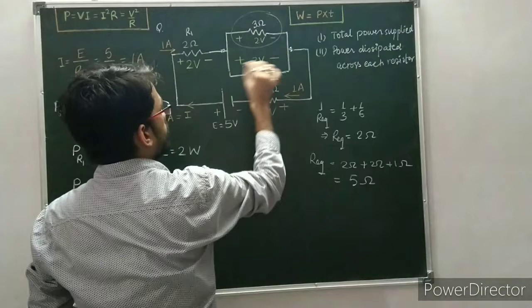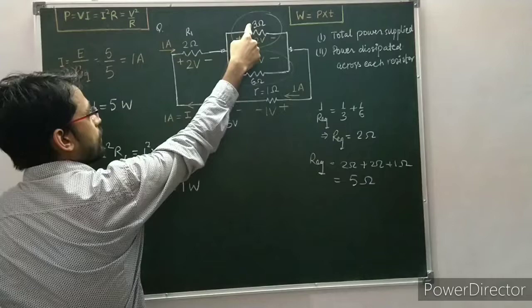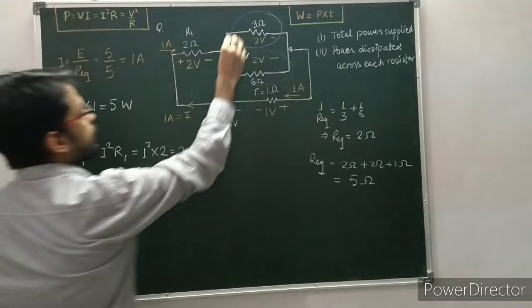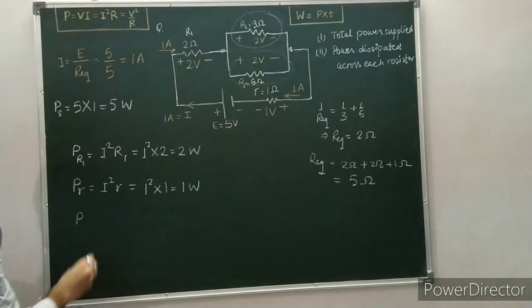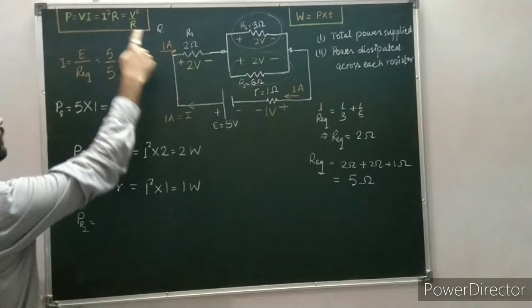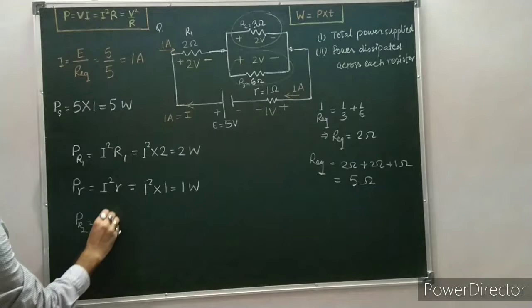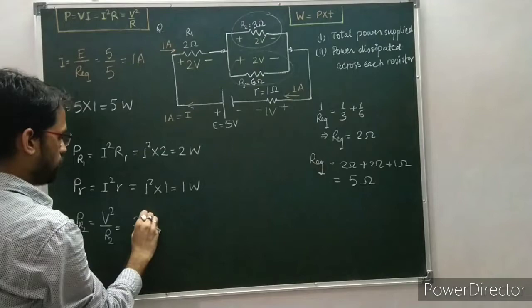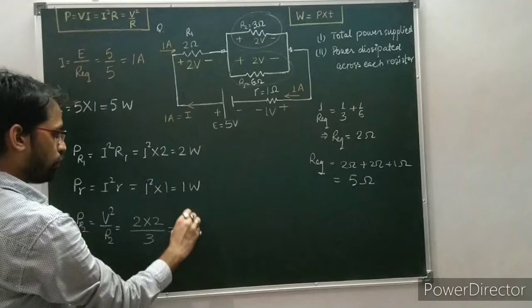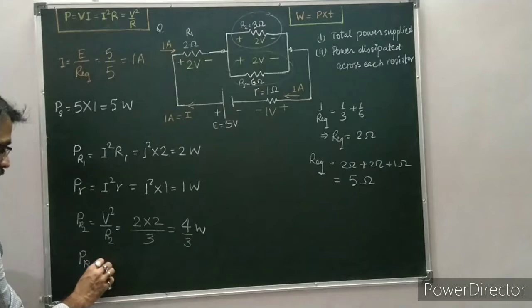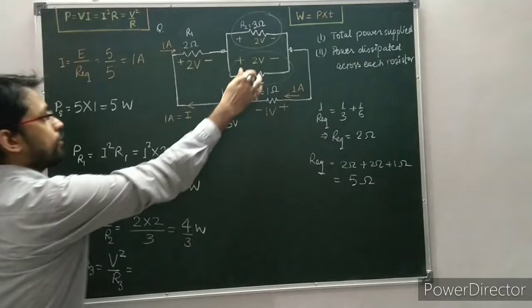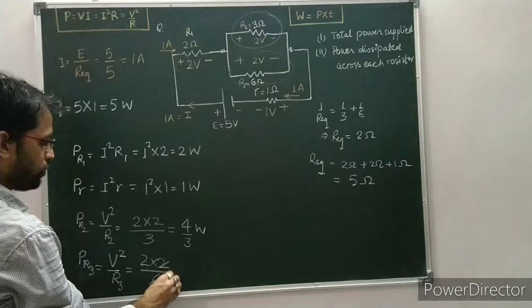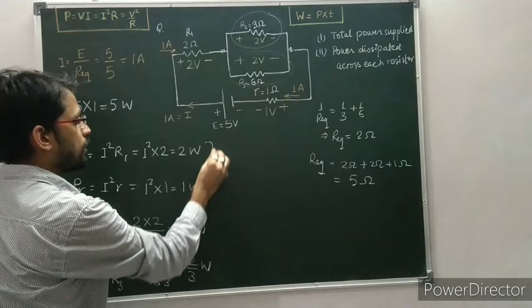Now we can calculate the power dissipated across these two resistors because we know both the resistance and the potential difference. Using the formula P = V²/R: the power dissipated across R2 (3 ohm) is 2² / 3 = 4/3 watt, and across R3 (6 ohm) is 2² / 6 = 4/6 = 2/3 watt.